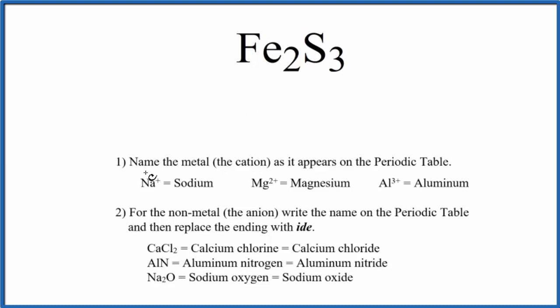So we're going to write the name of the metal first, just as it appears on the periodic table. Fe, that's iron. Next, we'll write the name for the non-metal as it appears on the periodic table. Lowercase s.